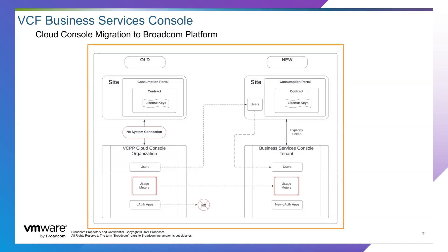Upon migration, any new usage meter registrations will occur in the new Business Services Console tenants. Usage meters communicating only legacy VMware license keys will not be migrated. Please note, each site with an active commit contract will be linked to one Business Services Console tenant. If you have usage meters registered in multiple VCPP organizations and only have one site, please contact your SA or submit an SR request to have those usage meters moved to the one organization you would like migrated.